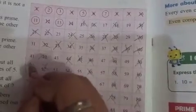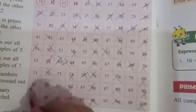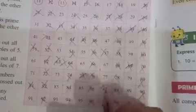Now circle 3 and cross all multiples of 3: 6, 9, 12, 15, 18, 21, 24, 27, 30, 33, 36, 39, 42, 45, 48, 51, 54, 57, 60, 63, 66, 69, 72, 75, 78, 81, 84, 87, 90, 93, 96, and 99.